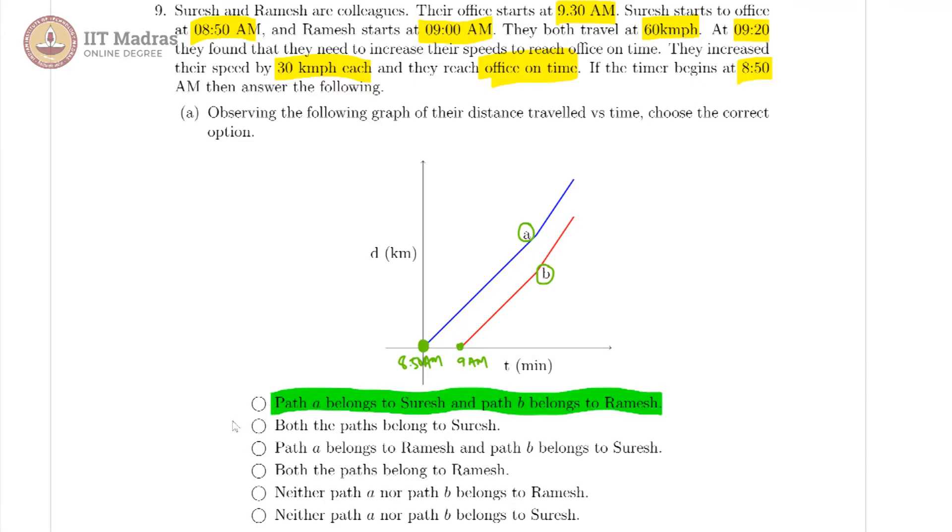Of course, this is wrong because both paths do not belong to Suresh. This is also wrong because path A does not belong to Ramesh, both paths do not belong to Ramesh. And Ramesh has a path, Suresh has a path. So all of these options are wrong, only option A is right.